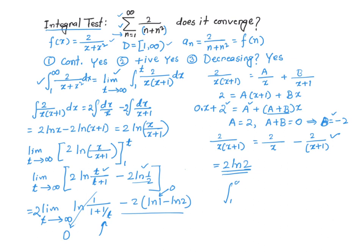So the integral from 1 to infinity of 2 over x plus x squared dx equals 2 ln of 2, which is a constant. Since this integral converges, so does the series. Therefore, the summation from n equals 1 to infinity of 2 over n plus n squared does, in fact, converge. I hope this discussion was helpful — thank you very much.